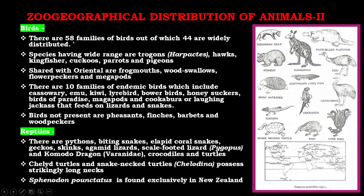For birds, there are 58 families of birds, out of which 44 are widely distributed. Species having a wide range include trogons, hawks, kingfishers, cuckoos, parrots, and pigeons. Shared with the Oriental region are frogmouth, woodswallows, flowerpeckers, and megapods. There are 10 families of endemic birds which include cassowaries, emu, lyrebird, bowerbird, honeyeaters, and birds of paradise.